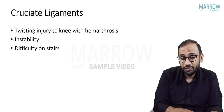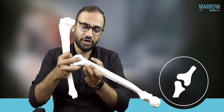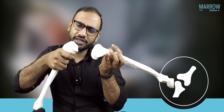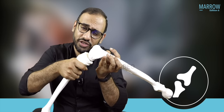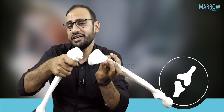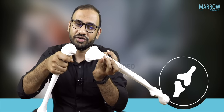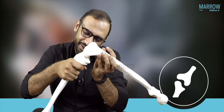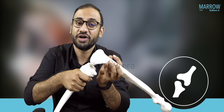For ACL, translate the tibia anteriorly — this is the anterior drawer test. For PCL, in the same position, simply translate the tibia posteriorly — this is the posterior drawer test. Now let me demonstrate the anterior drawer test. The anterior cruciate ligament prevents anterior translation of the tibia and hyperextension of the knee. There are two important tests: the anterior drawer test and the Lachman test.